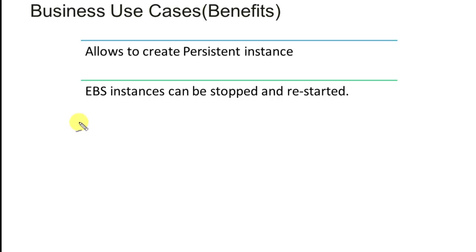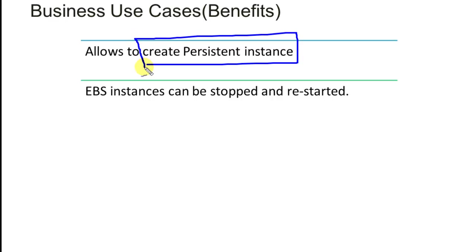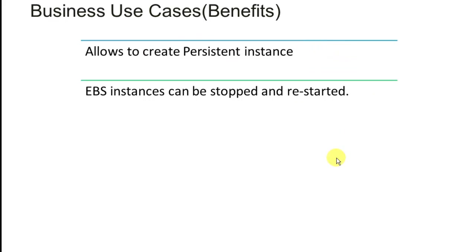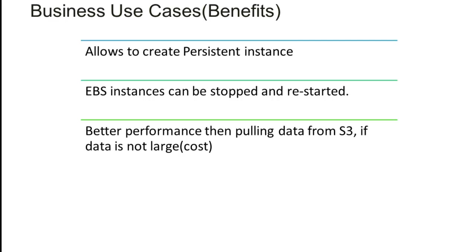EBS allows you to create a persistent instance AMI, and EBS instances can be stopped and restarted. It also has much better performance than pulling your data from S3, which is an important advantage.